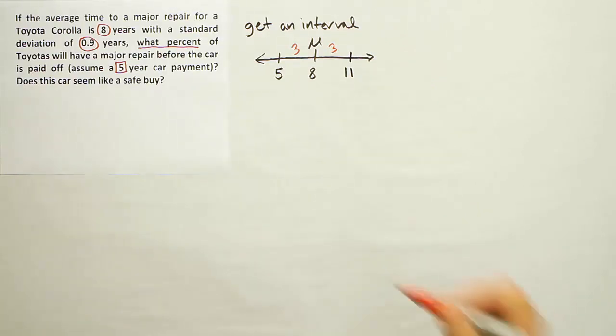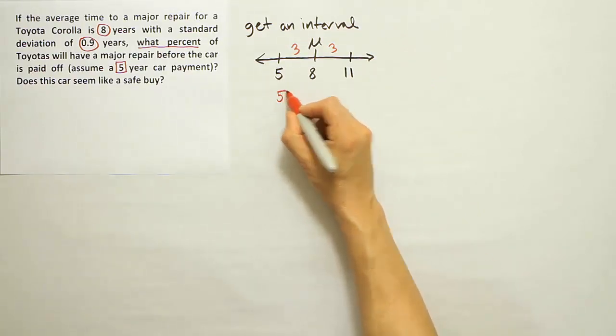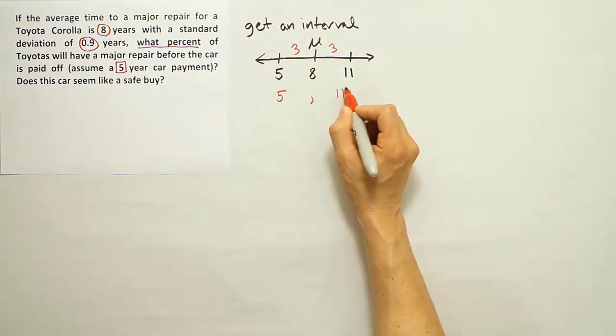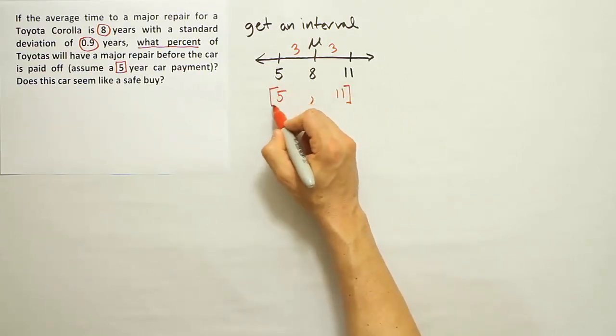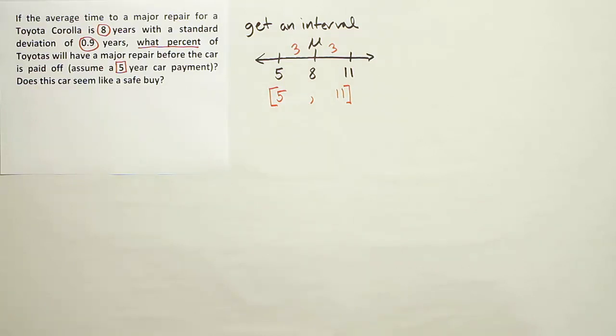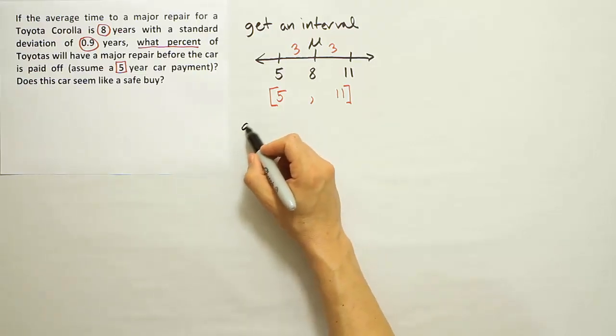So my interval for this problem is going to be from 5 to 11. I can work with that interval using Chebyshev's theorem. Alright, so let's do that. Once you have an interval, the next step is to get k.